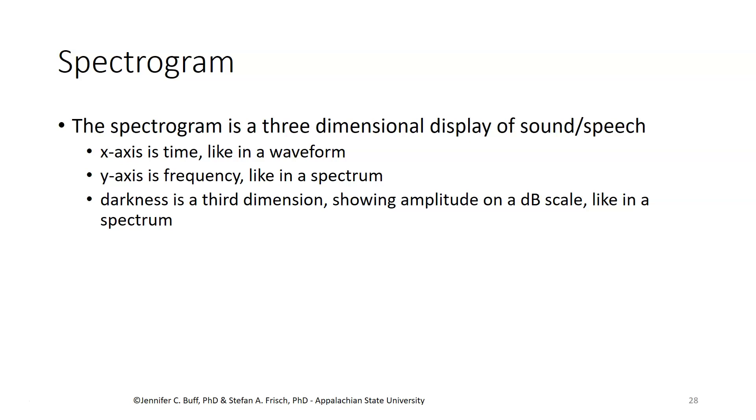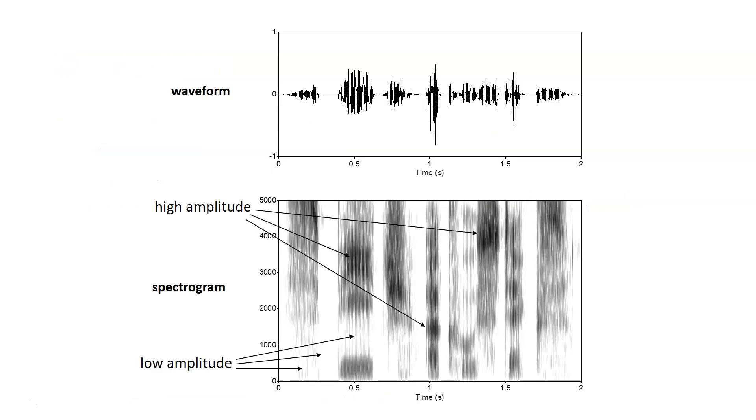In some cases, people use color on a spectrogram to show amplitude. So here we have an example with a familiar waveform display in the top, showing two seconds of speech, and a spectrogram display on the bottom, showing the same two seconds of speech.